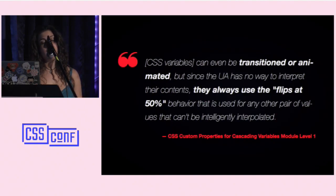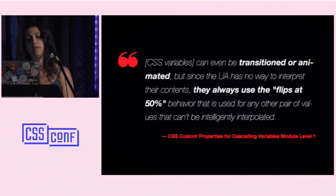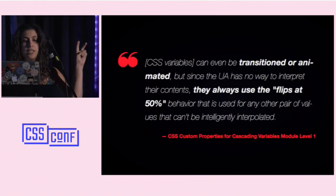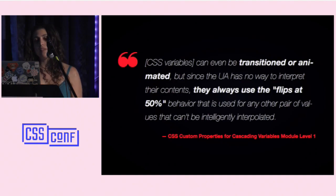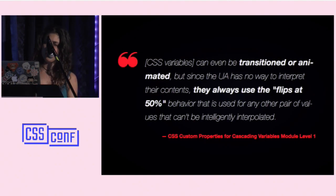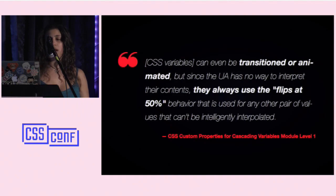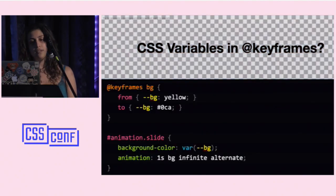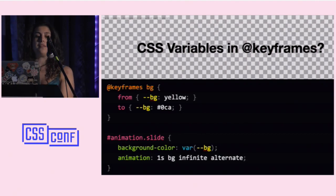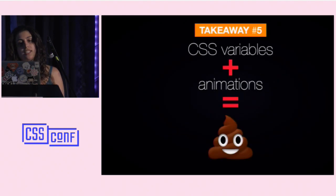The spec says CSS variables can be transitioned or animated, but since the UA has no way to interpret their contents, they always use the 'flip at 50%' behavior used for any other pair of values that cannot be intelligently interpolated. Because the browser doesn't know exactly what type these variables are, it doesn't know how to interpolate them. What should happen is it flips from yellow to turquoise without any transition — but Chrome dropping them completely is a browser bug.